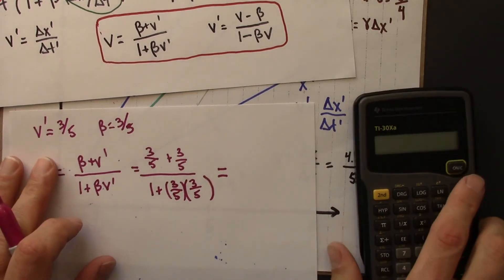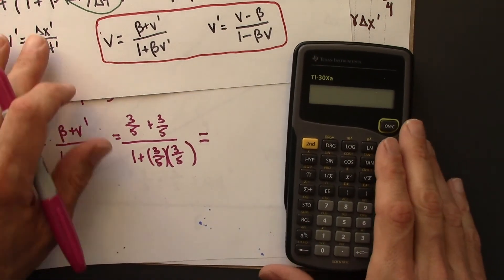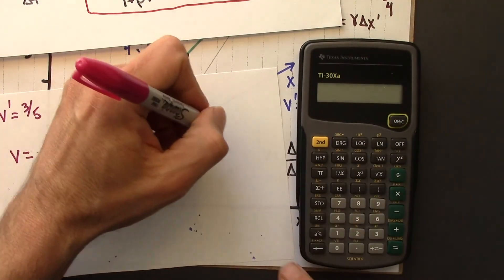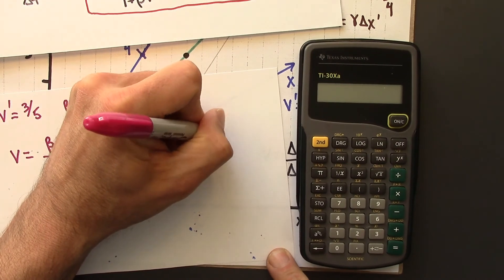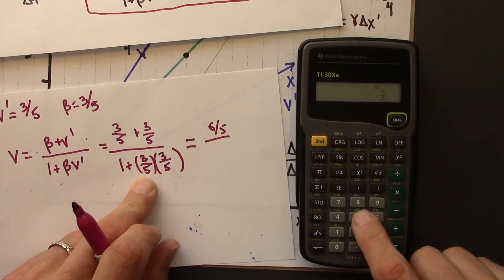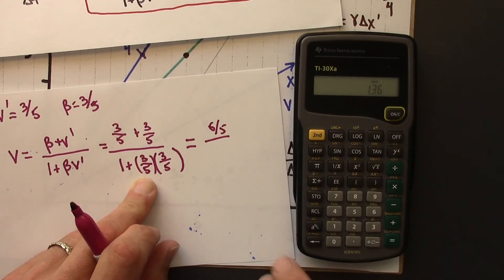I guess we could do fun with fractions. Maybe we'll just do fun with calculator instead. 3 fifths plus 3 fifths. Alright, that I can do. That's 6 fifths. Let's do that. This thing is 3 divided by 5 squared plus 1. That's 1.36.